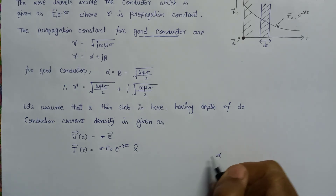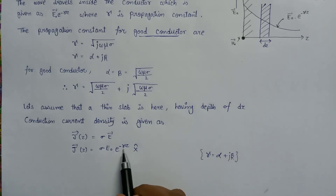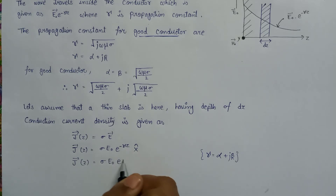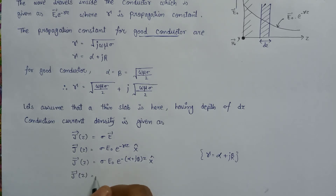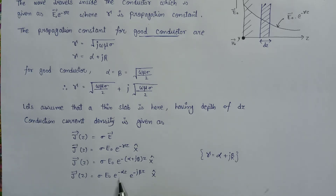Since the propagation constant gamma can be written as alpha plus j beta, substituting into the conduction current density gives J(z) equals sigma E naught e to the power minus alpha plus j beta times Z, times x-cap. Separating the exponential terms, this becomes sigma E naught e to the power minus alpha Z, times e to the power minus j beta Z, times x-cap. This is the conduction current density in terms of attenuation and phase constants.